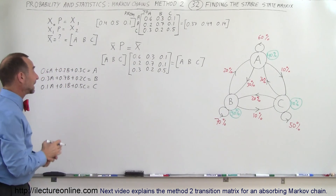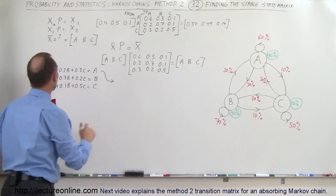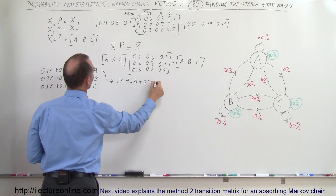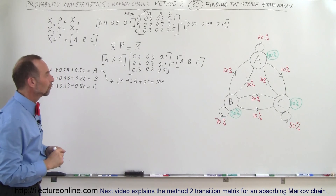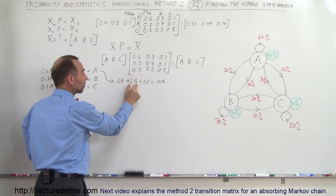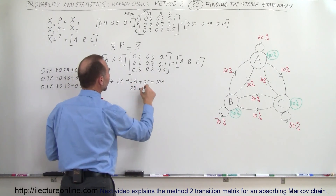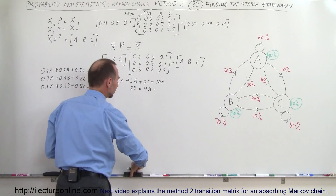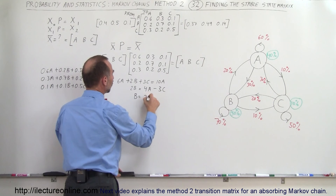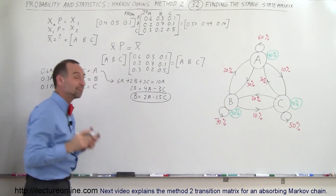Now we have to solve those three equations to find A, B and C. Starting with the first equation, let's multiply everything by 10 to get 6A + 2B + 3C = 10A. We'll solve for B — the variable with the smallest coefficient — in terms of A and C. That gives us 2B = 4A − 3C, so dividing both sides by 2: B = 2A − 1.5C.